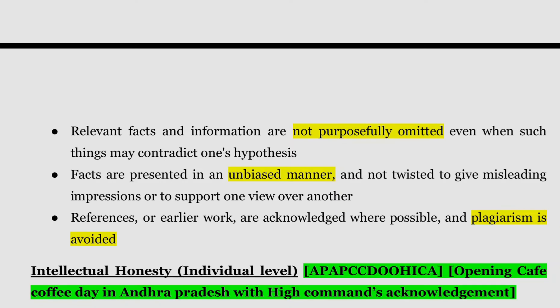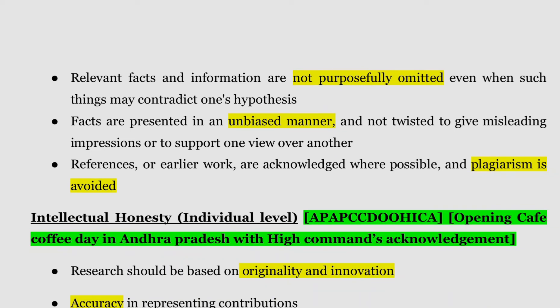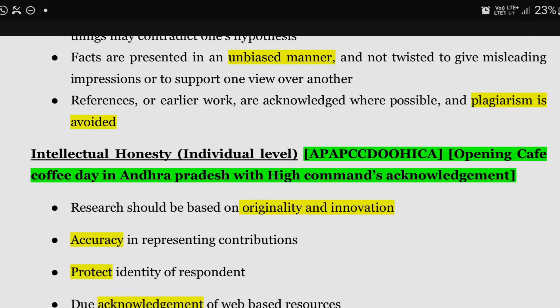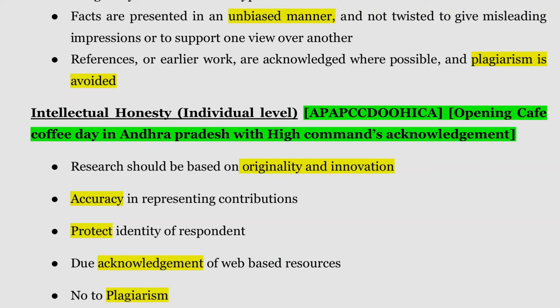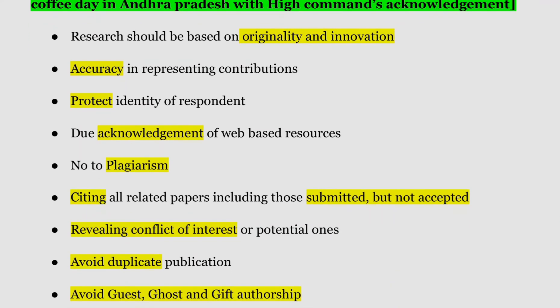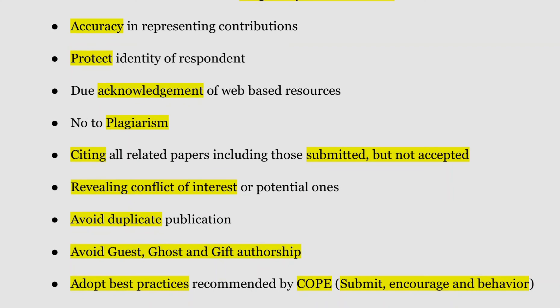References and earlier work must be acknowledged where possible and plagiarism must be avoided. Plagiarism, fabrication, falsification, and misrepresentation are key terminologies to highlight in your answers. Intellectual honesty is exhibited at the individual level and at the publisher level. At the individual level: research should be based on originality and innovation, accuracy in representing contributions, protection of respondent identity, due acknowledgement of web-based resources, no duplication, and citing all related papers including those submitted but not accepted.